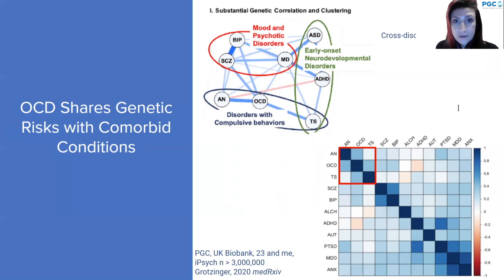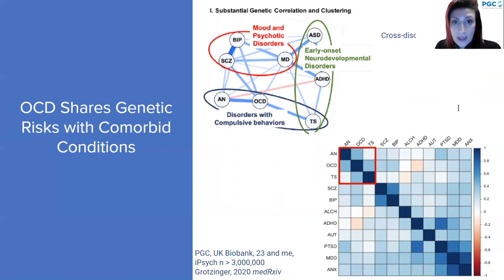OCD seems to share genetic risk with conditions it is comorbid with. Results from two large recent studies show that OCD is genetically correlated with commonly comorbid disorders like major depressive disorder and anxiety, but is most genetically correlated with anorexia and Tourette's, forming a compulsive behavior cluster in terms of genetics. These results suggest that some phenotypic correlations for certain OCD comorbidities are driven by genetics, whereas others may not be.